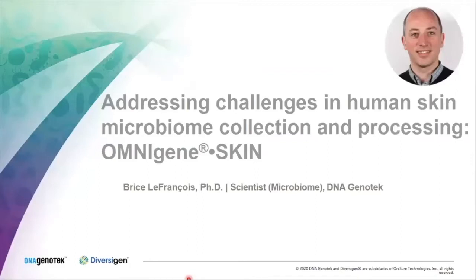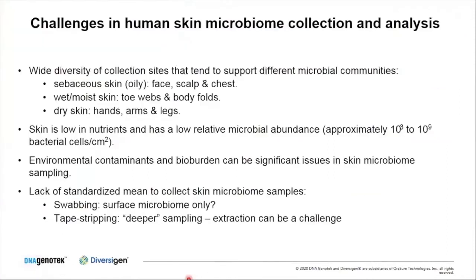My part of the talk today is focused on addressing the challenges in human skin microbiome collection and processing. When looking at the human skin, you're looking at a wide diversity of collection sites, and each of these sites tends to support different microbial communities. Typically, you can subdivide the human skin into three main groups: sebaceous or oily skin — the face, scalp, or chest; wet or moist skin — like toe webs or body folds; and dry skin — hands, arms, and legs. In general, skin is very low in nutrients and has very low relative microbial abundance.